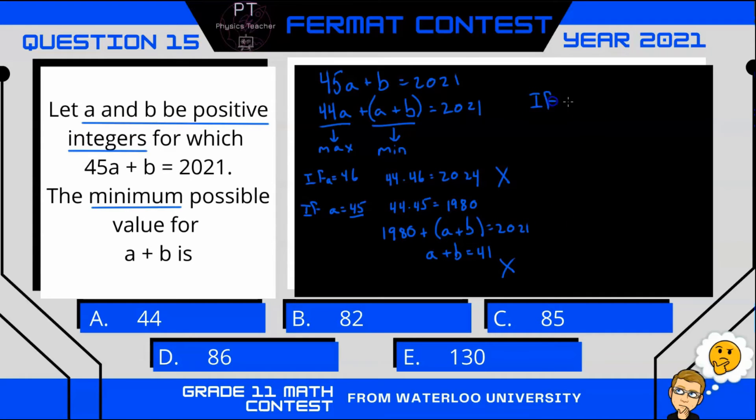What if a is 44? Well, if a is 44, here we have 44 times a, so 44 × a where a is 44, that's going to equal 1936.